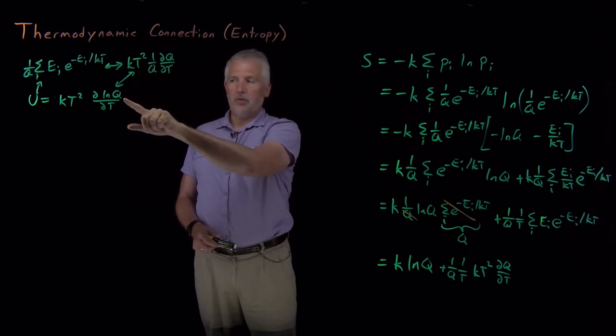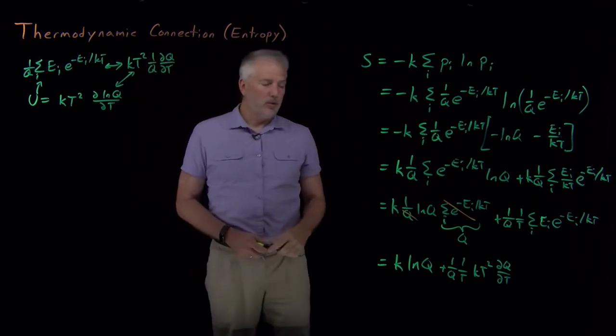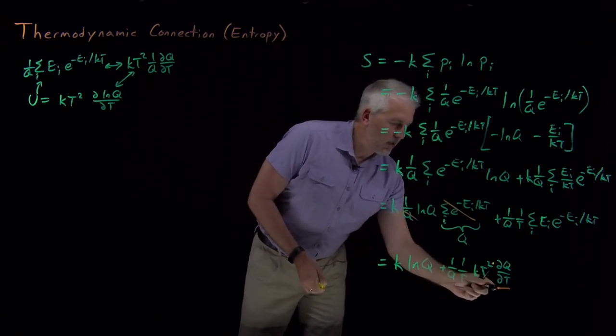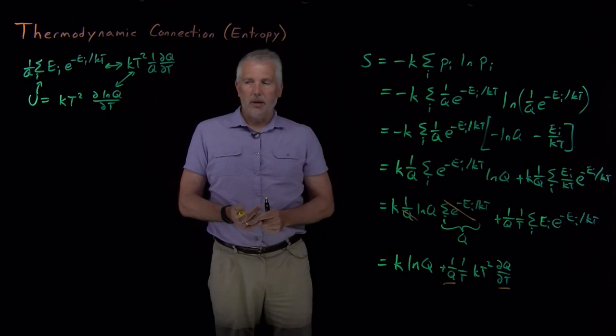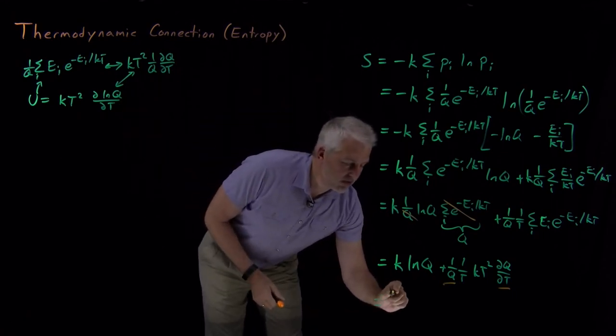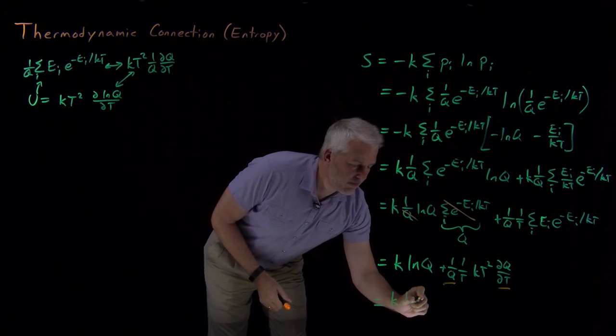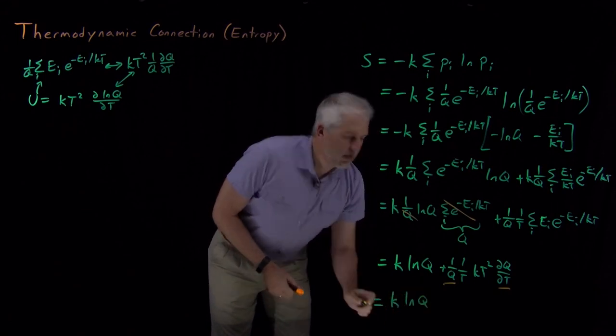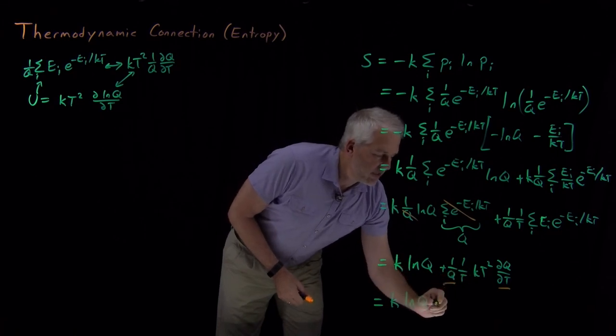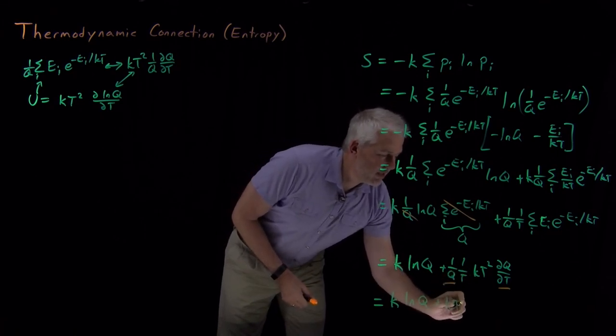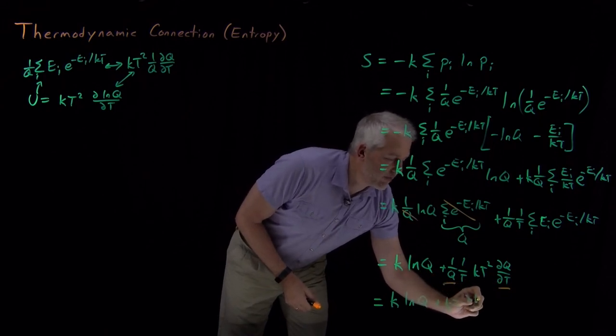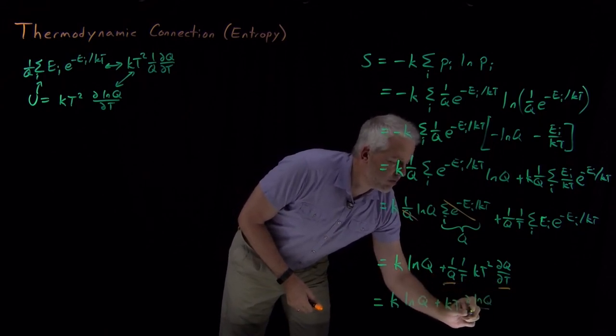And then chain rule tells us that we also need the derivative of q. So this 1 over q dq dt, I'm going to take that portion of it, I'm going to rewrite it as d log q dt. So the final result is k log q. After the cancellation of t's, I've got a kT. And then 1 over q dq dt becomes derivative of log q with respect to t.